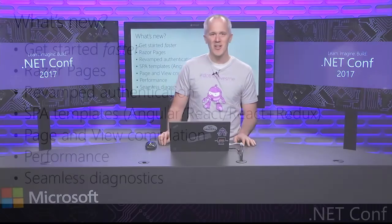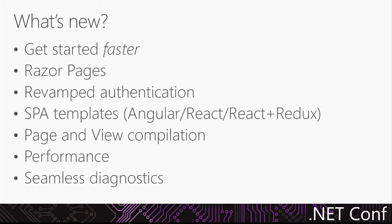Here's a set of features I'm going to be showing you today. First, it's a lot easier to get started faster with ASP.NET Core 2.0 — fewer files, fewer lines of code. We've introduced a new page-based application model called Razor Pages, which makes it super easy to write dynamic web UI. We've also completely revamped the authentication system, and added support for two-factor authentication using authenticator apps.